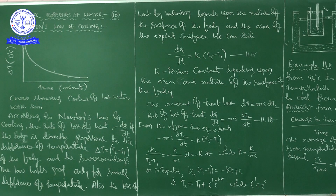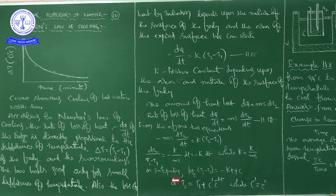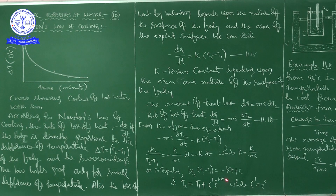Finally, T2 = T1 + C′·e^(−Kt), where C′ = e^C. This final equation enables us to calculate the time of cooling of a body through a particular range of temperature.